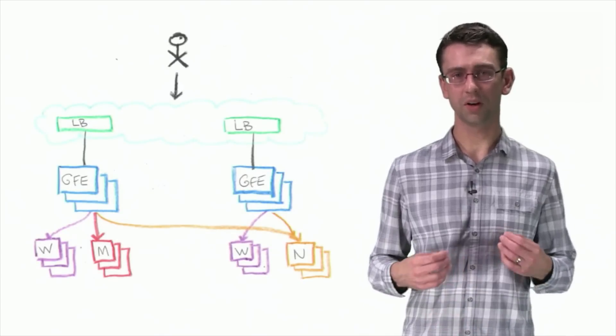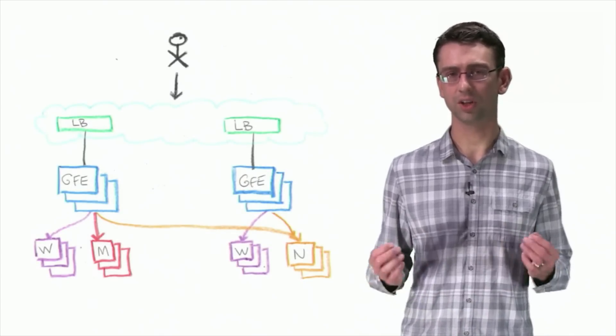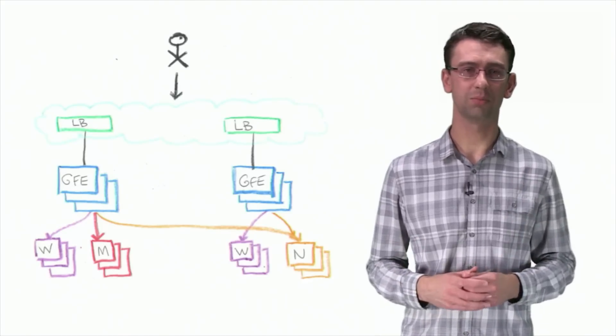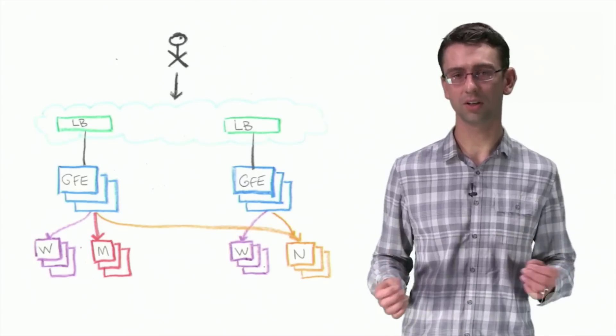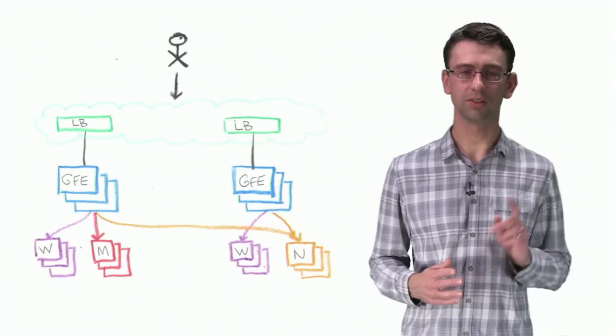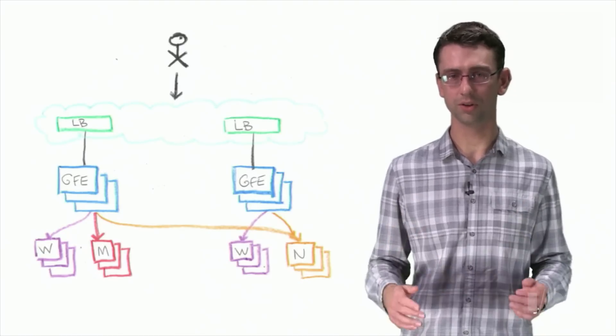To avoid this, we've developed a method of sending clients to the closest data center without relying on DNS geolocation. This means we can use a single VIP and still give our customers the low latency they've come to expect from Google. Google's global load balancer knows where the clients are located and directs the packets to the closest location. Using a single VIP means we can increase the TTL of our DNS records, which further reduces latency.